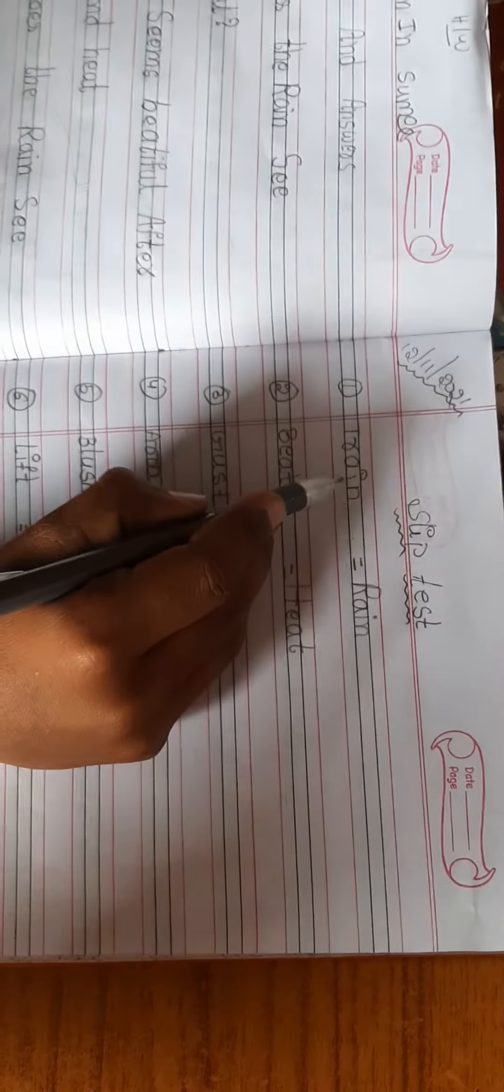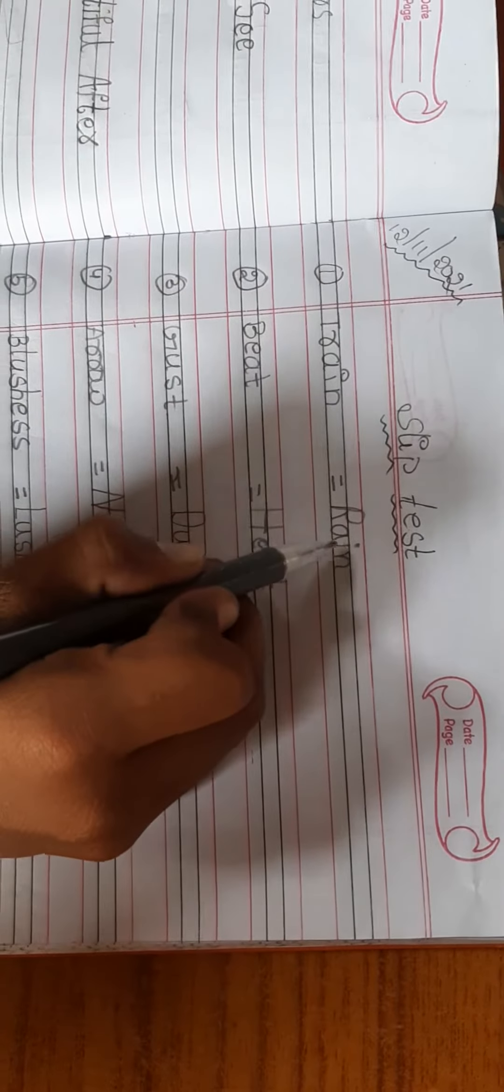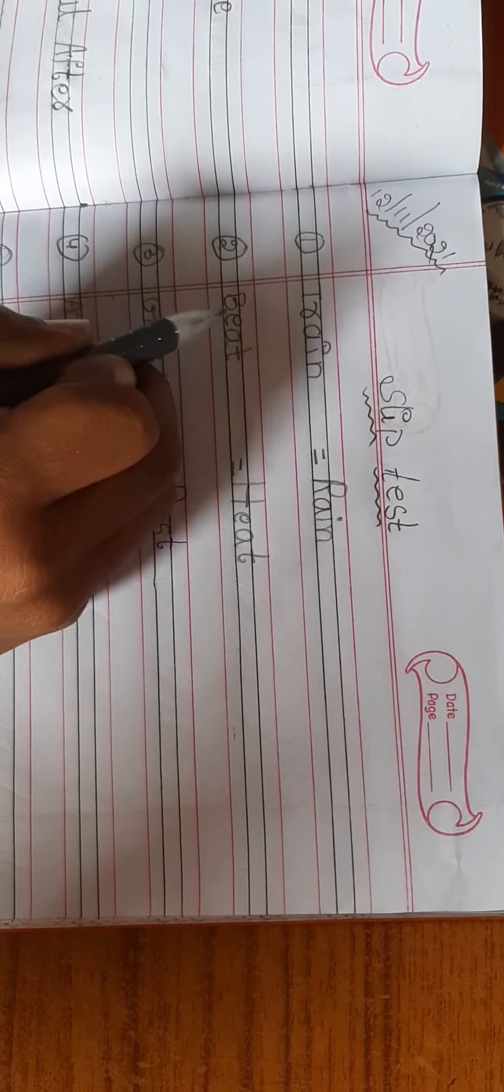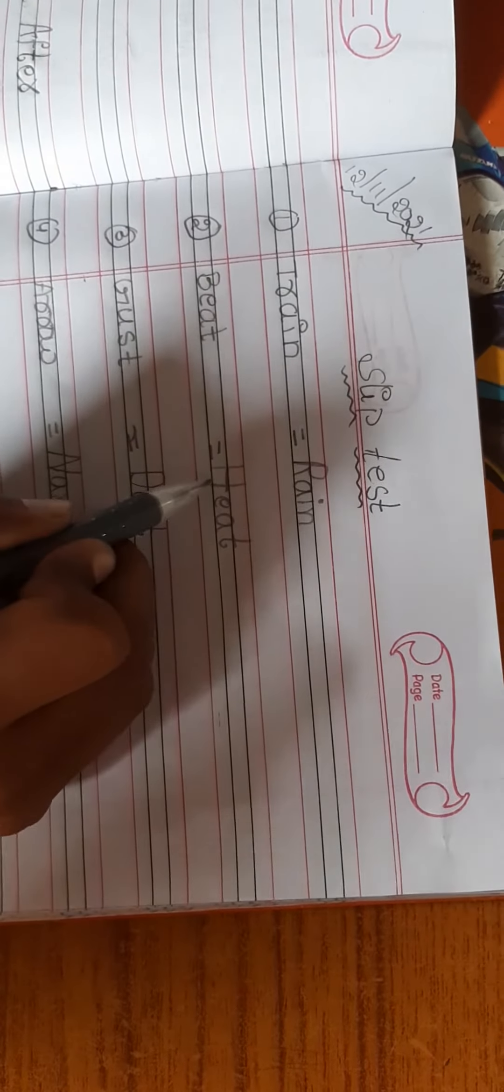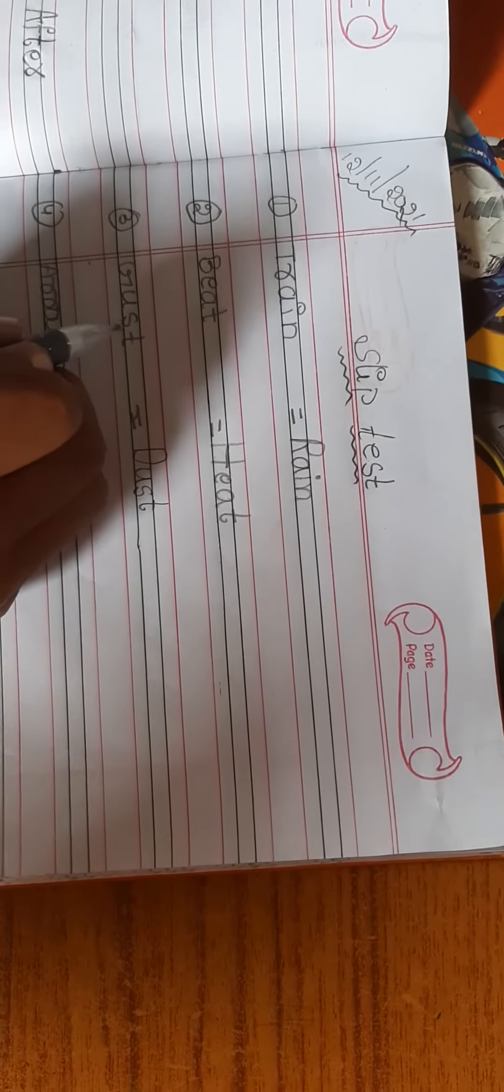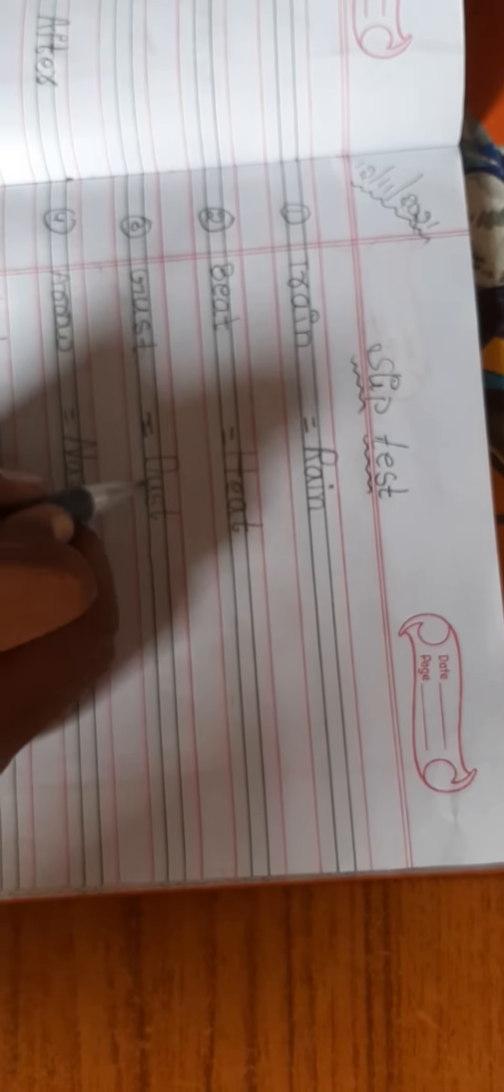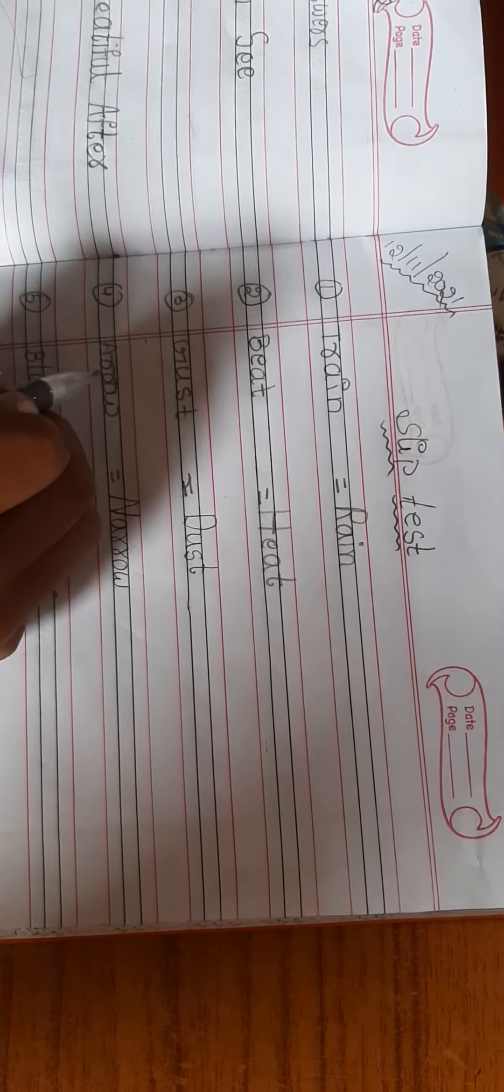First. T-R-A-I-N, train. R-A-I-N, rain. B-E-A-T, beat. H-E-A-T, heat. G-U-S-T, gust. D-U-S-T, dust.